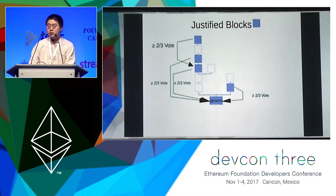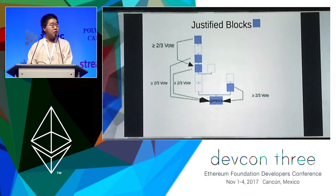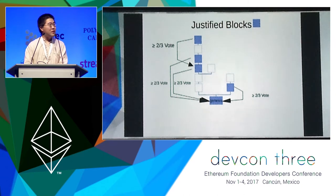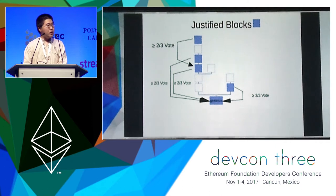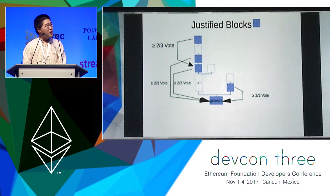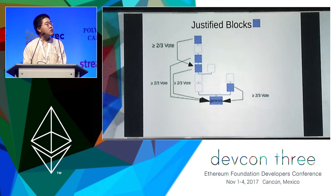We will be talking about justified blocks. There will be a single genesis block that everybody knows; the genesis block is justified. When there is a two-thirds vote citing a justified block, the voted-for block is also justified. We draw links along the two-thirds votes, and when a block is connected to the genesis block, it's justified.